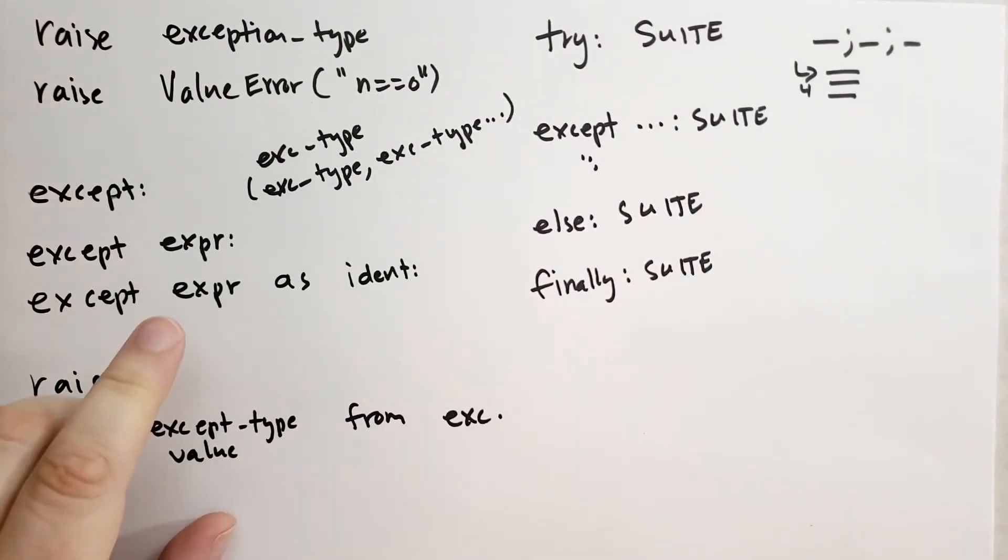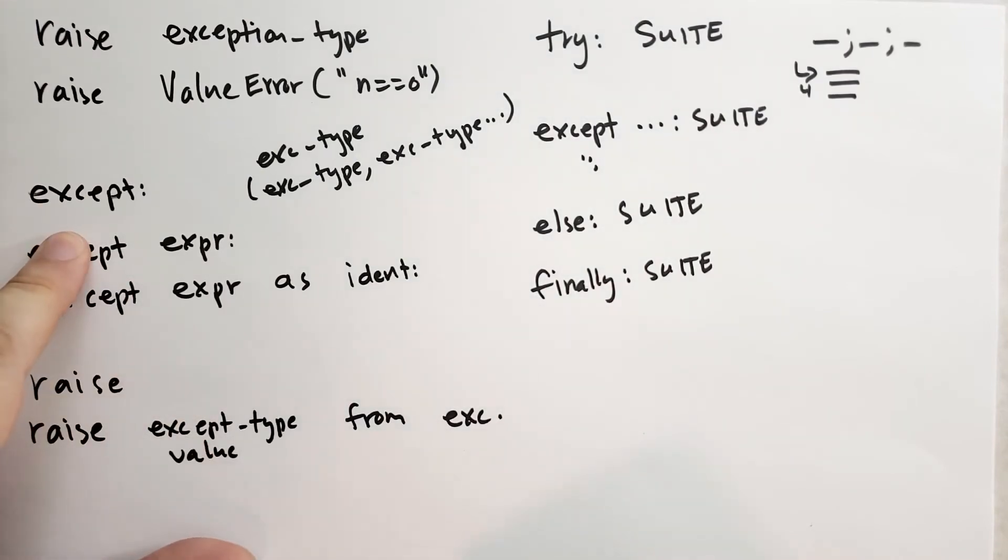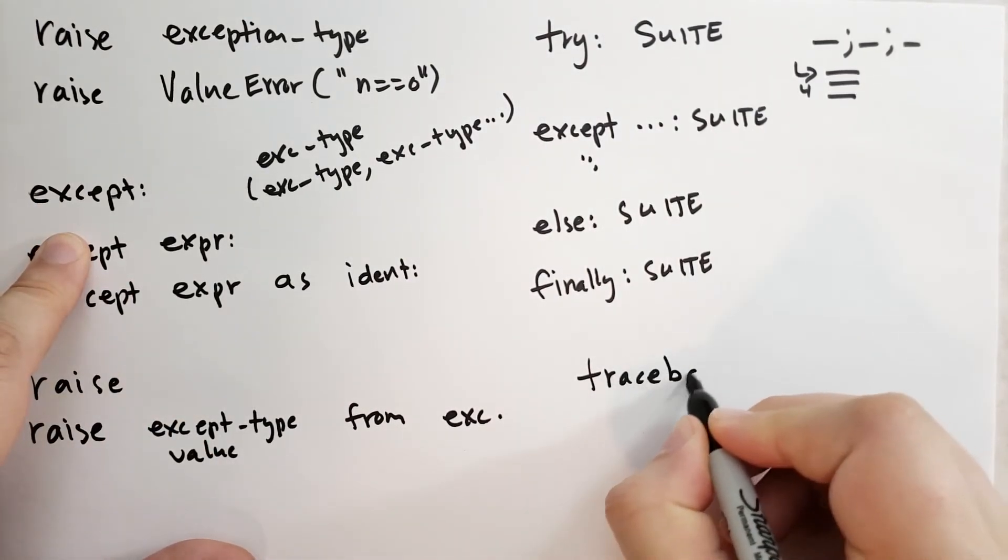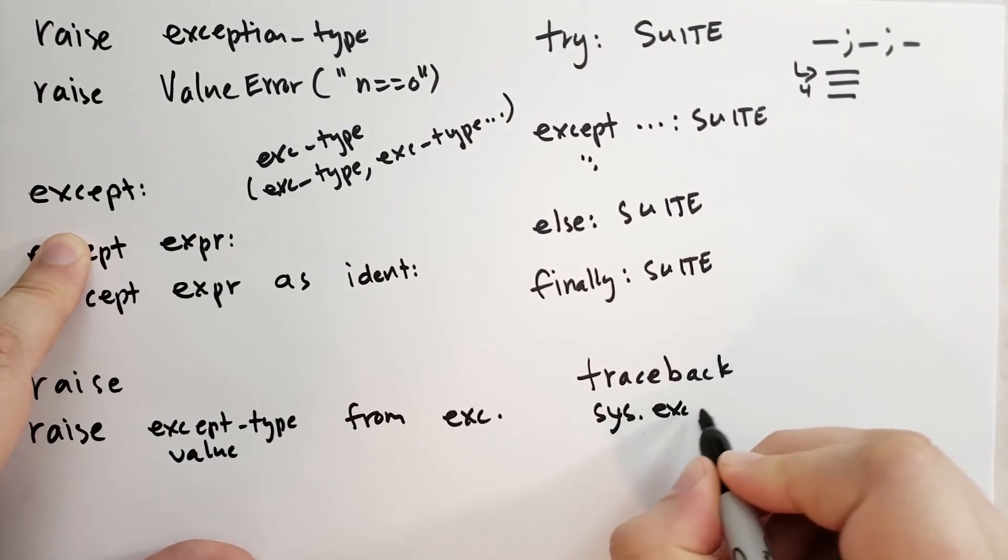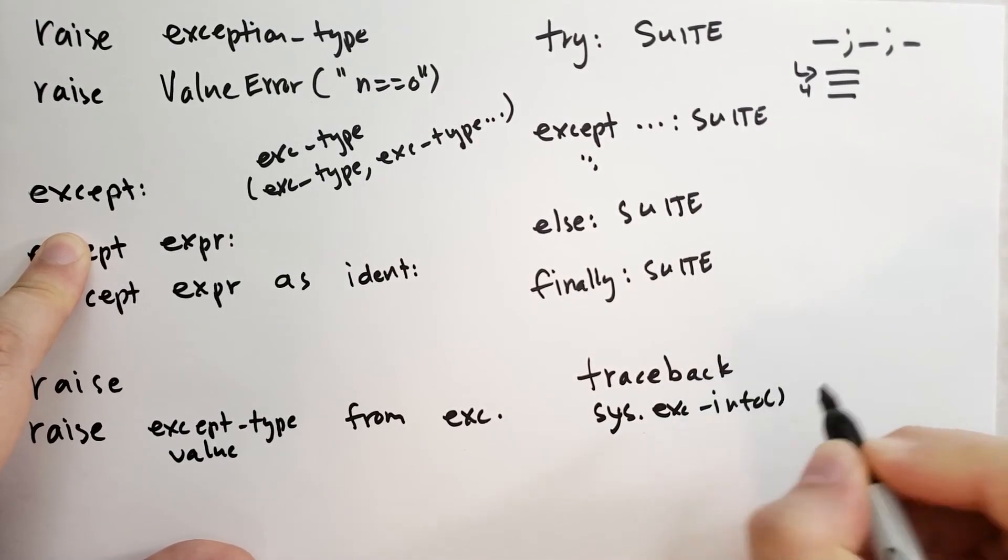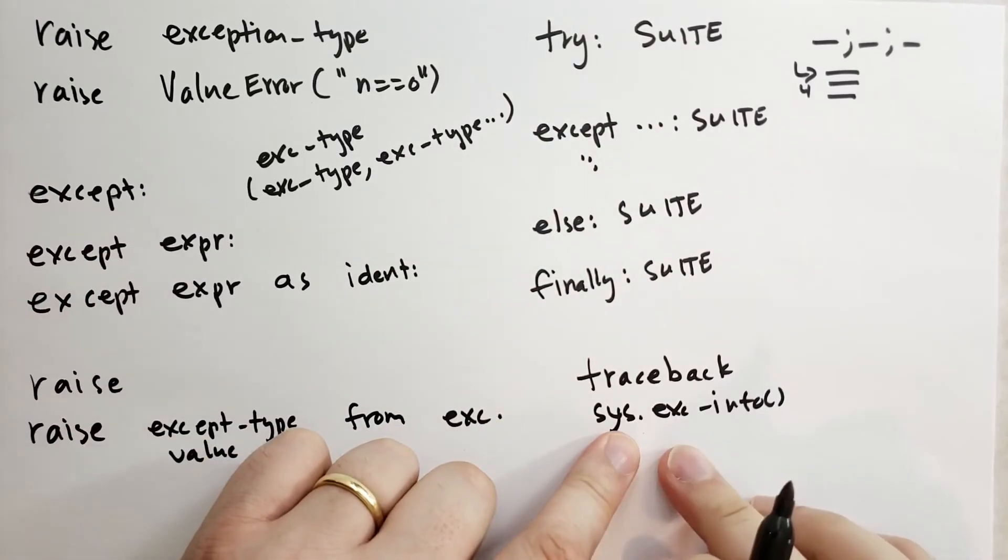If you want more information about the exception in the except block, you can look at the traceback module. There's also sys.excinfo, but I discourage using this. It's fairly powerful and can cause problems.